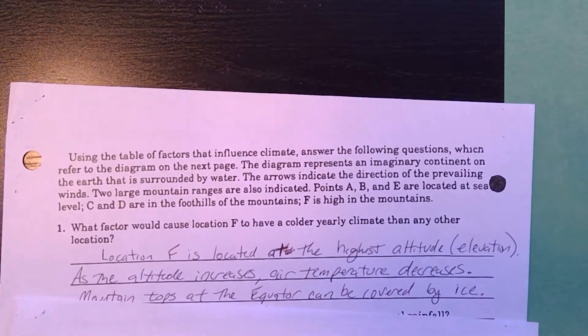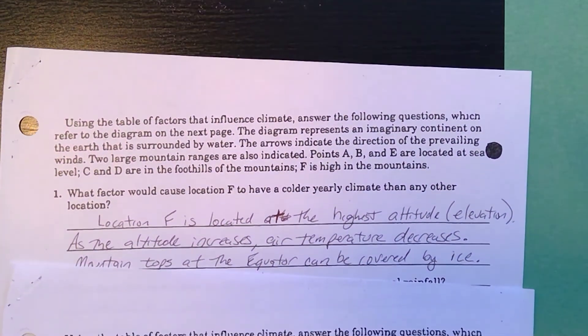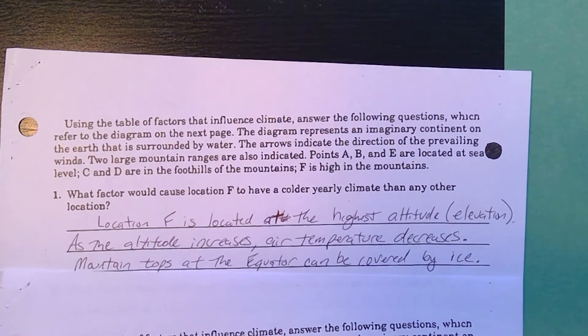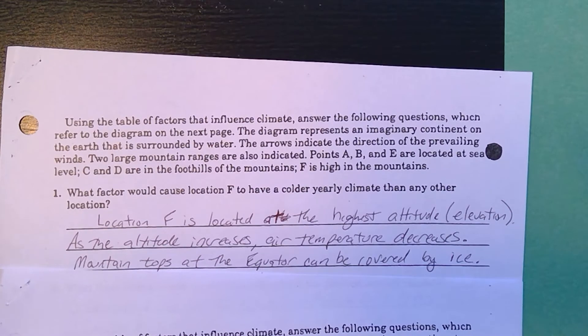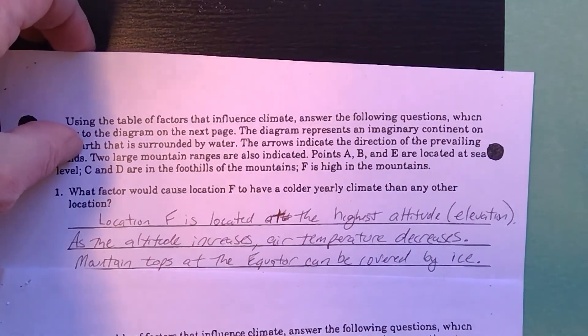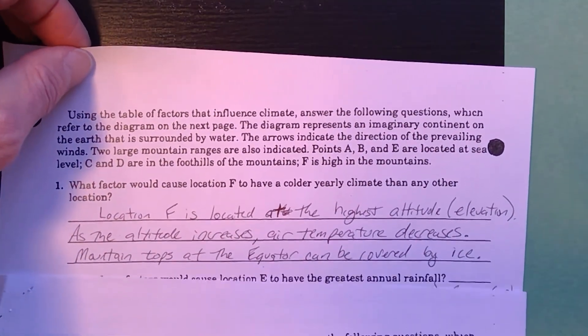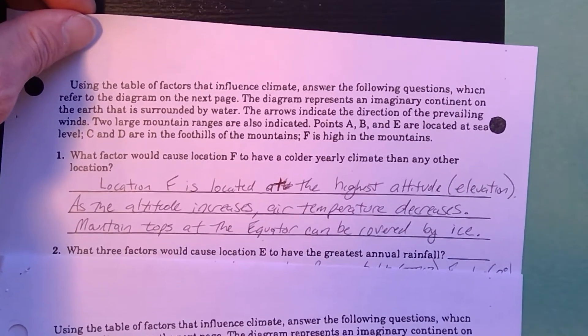For the first question, you might indicate something like this: F is located at the highest altitude. Altitude is an important climate factor. Since F is the highest altitude, it's going to have the lowest surface air temperatures. Temperature and altitude are indirectly related. As altitude increases, air temperature decreases. You can get snow covered mountains on the top of mountains at the equator.